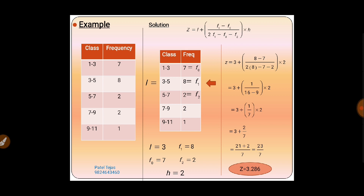So Z = 3.286 is our answer. Whenever you are given a question to find Z (mode), you should know this method. Among the three methods, this is the easiest one. Thank you.